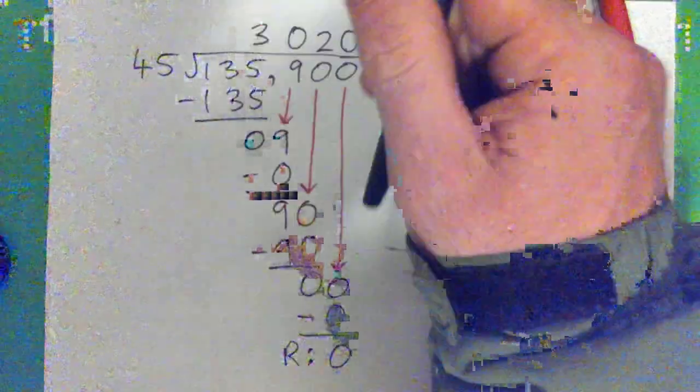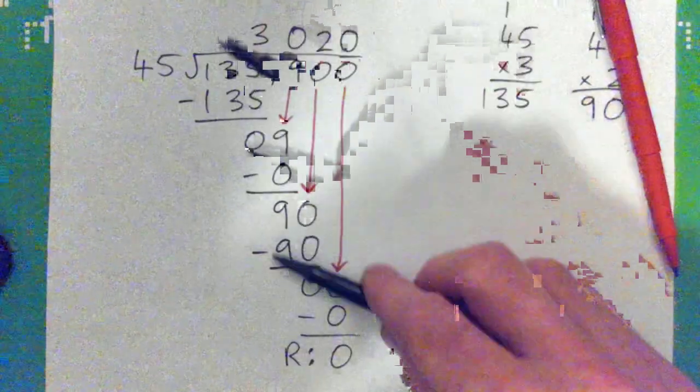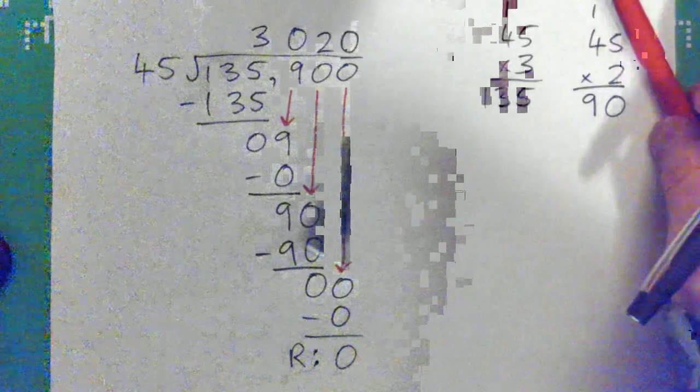You know, just, you want to just keep following the sequence, following the sequence. One second, let's just keep following the, probably best way. But anyway, you should get 3020.